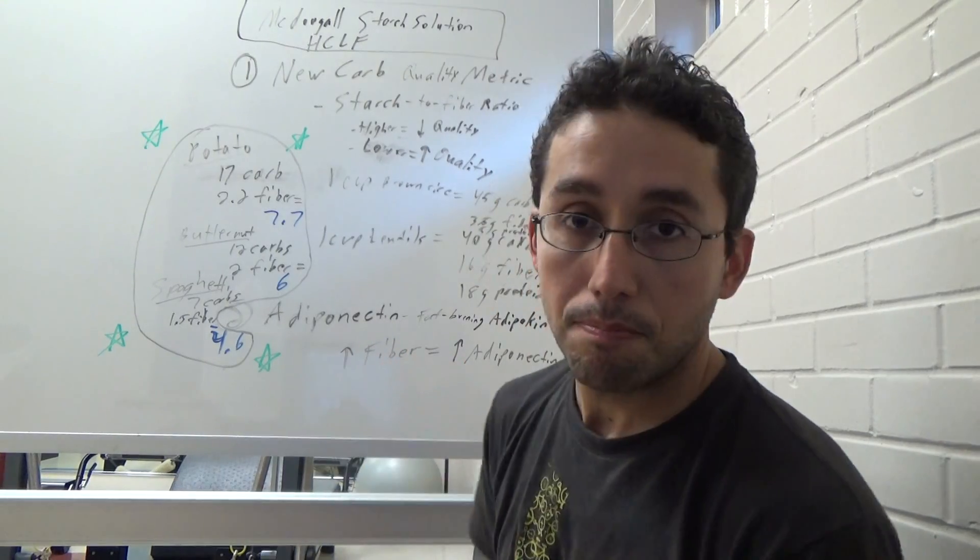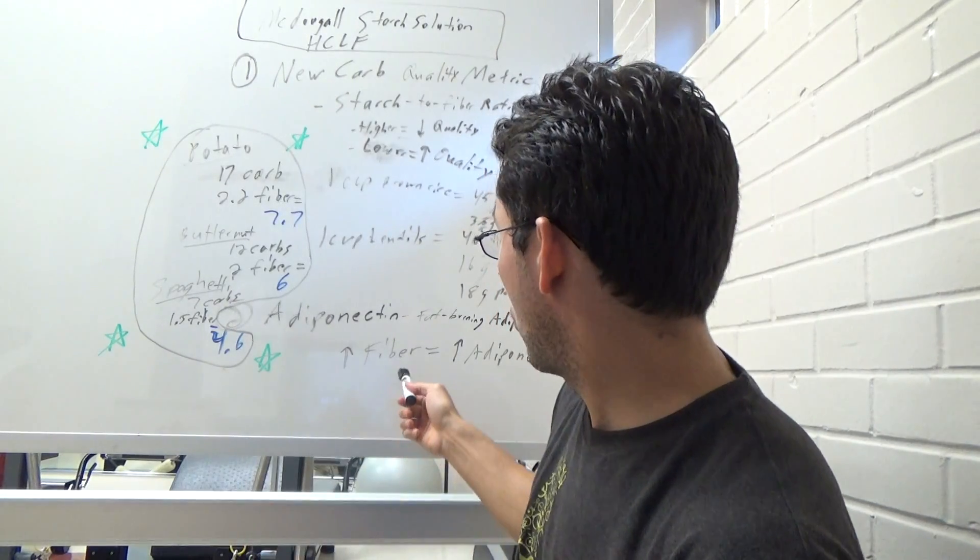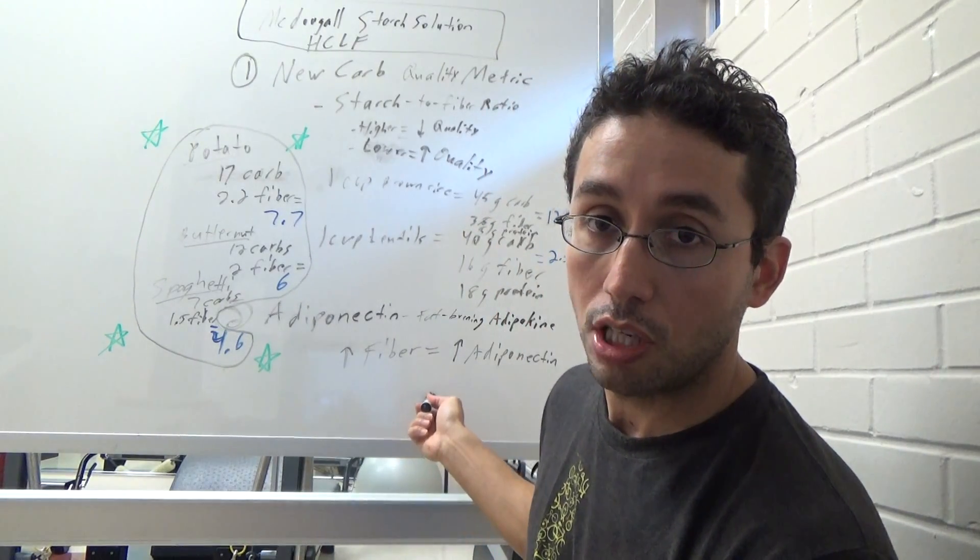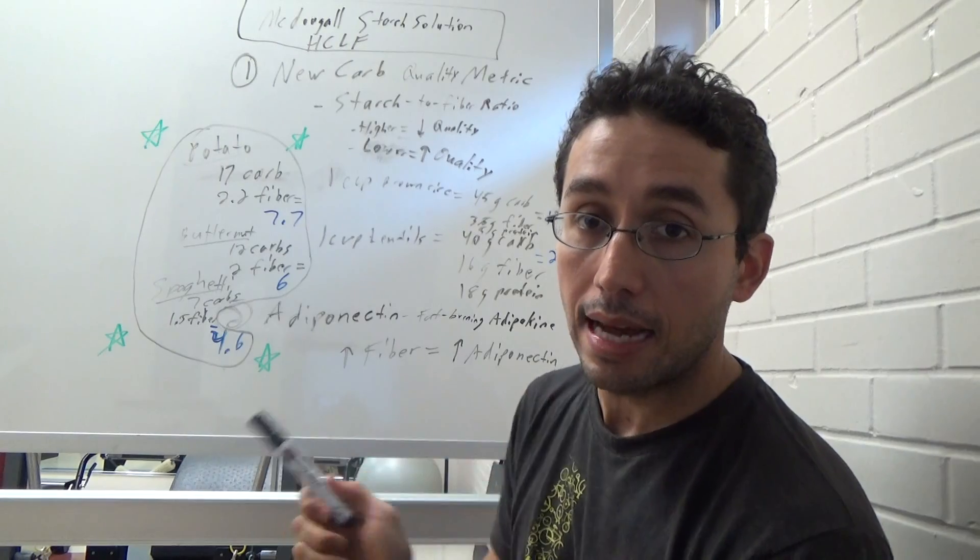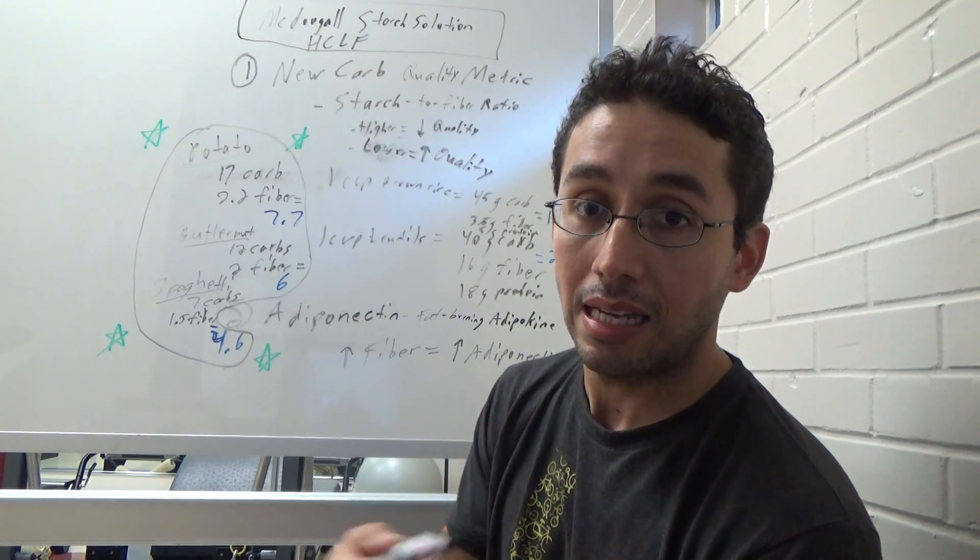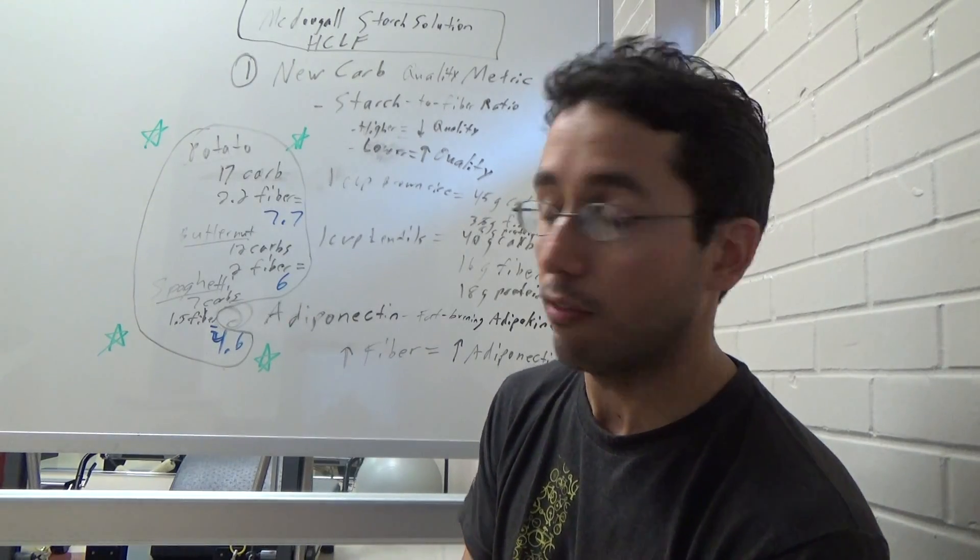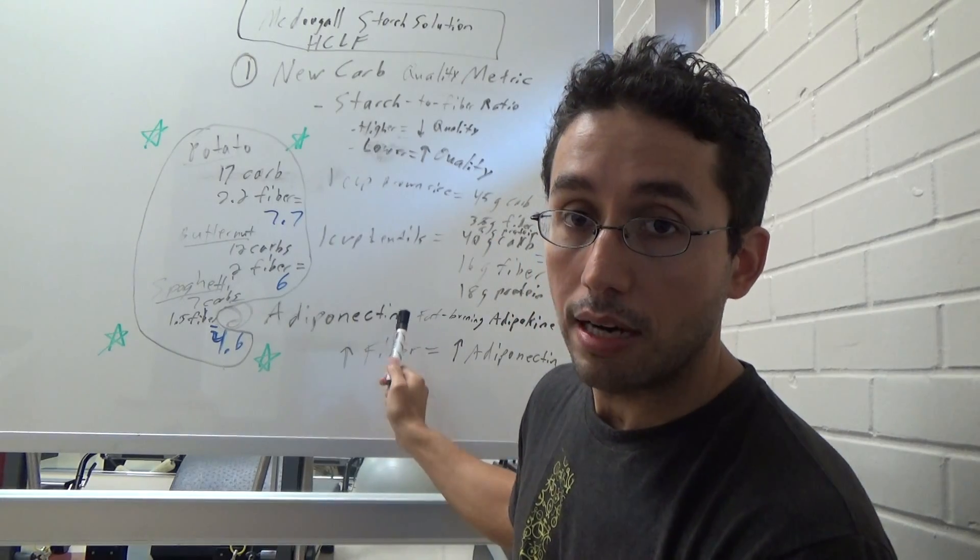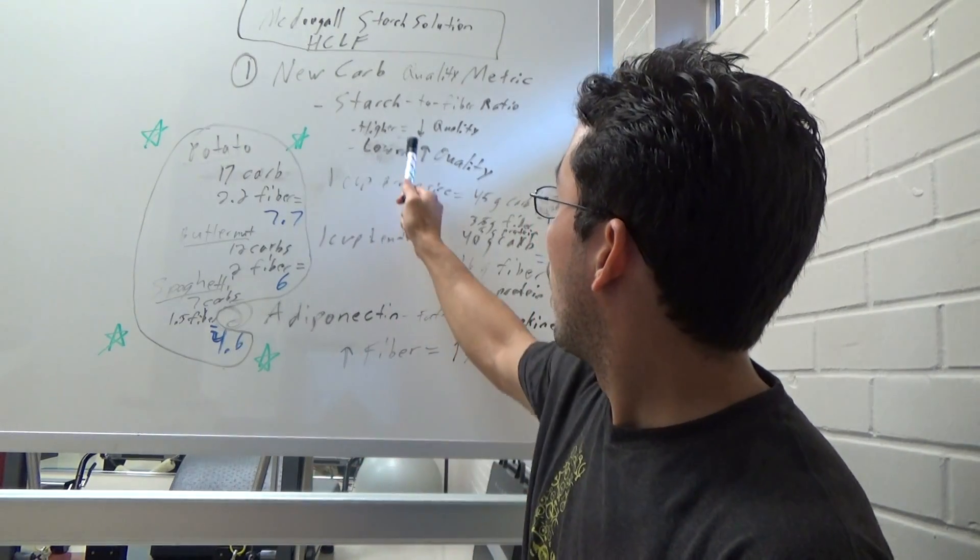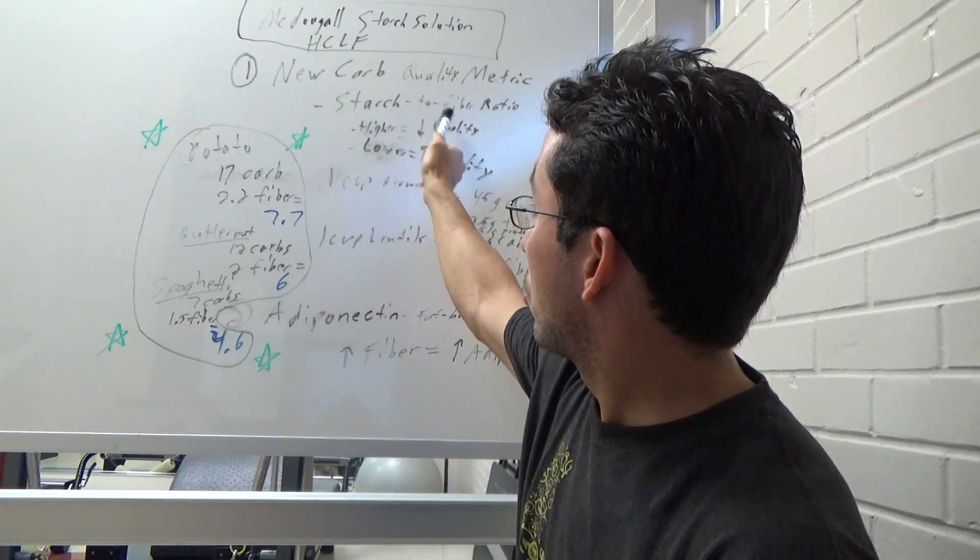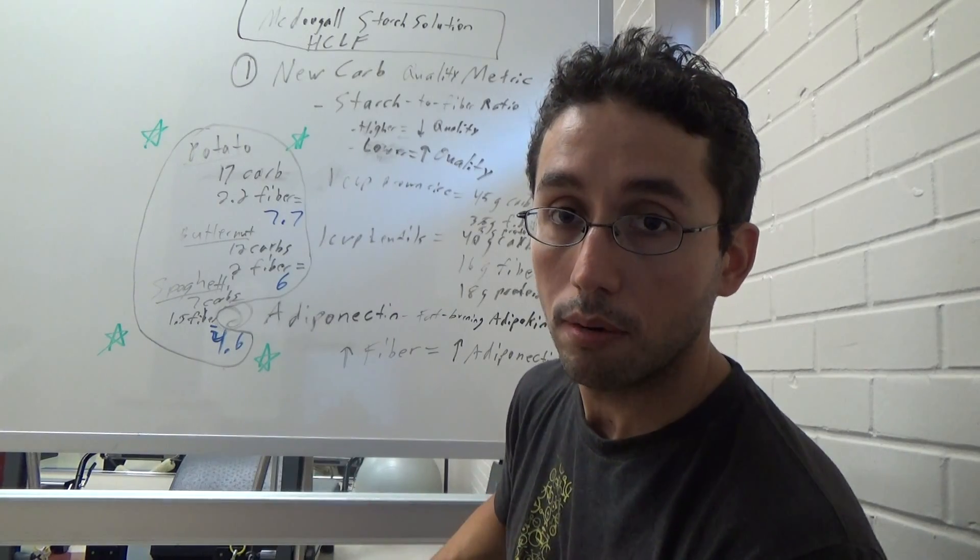But anyway, adiponectin guys, this is a fat burning adipokine. Basically, it's a hormone that's secreted in the body, particularly by our adipose tissue. And what's interesting was the study found that a higher fiber intake was associated with higher adiponectin levels. Adiponectin is like this super fat burning hormone in the body. Not only is it fat burning, it's also anti-inflammatory and it has antioxidant benefits. It's also related to cardiovascular disease risk, which is fascinating. So having higher levels of adiponectin are not only beneficial for fat loss, which is what we all want, but it's also beneficial for our health. It's clear that when we have a high starch to fiber ratio, we're going to have lower levels of adiponectin, because the ratio of carbs to fiber is going to be lower.